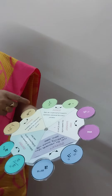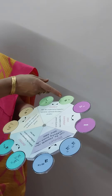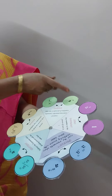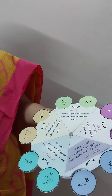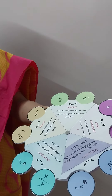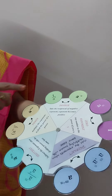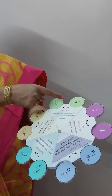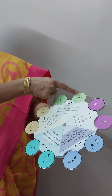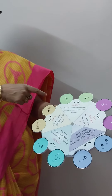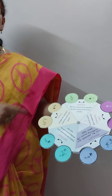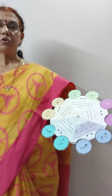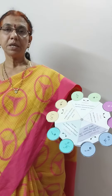Inverse: take the reciprocal of a negative exponent. The exponent becomes positive. A to the power minus n is equal to 1 divided by a to the power n.